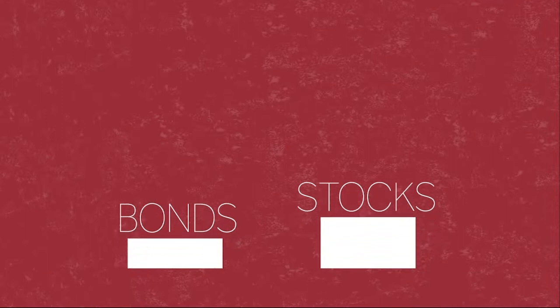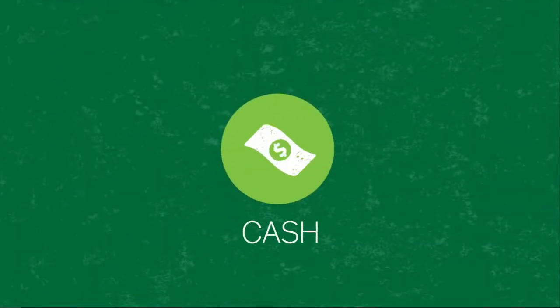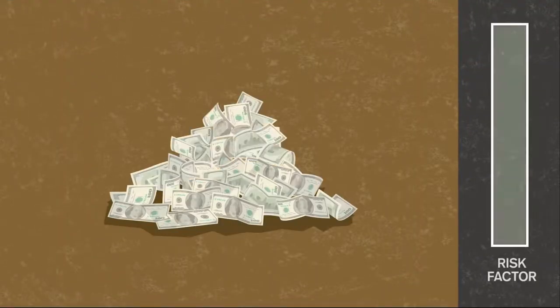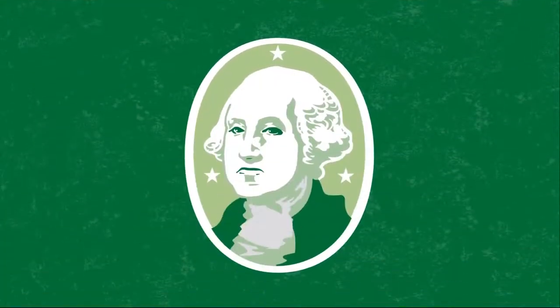However, in general, bonds are less risky than stocks. Cash is, well, cash. In a 401k, it's usually available as a money market or stable value fund. Unlike other assets, there's little risk that your money will lose value.